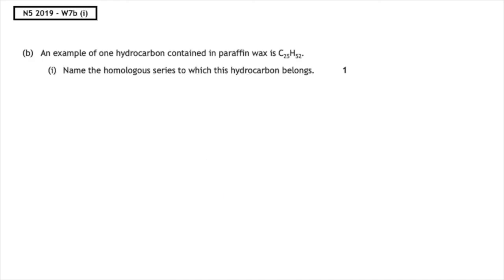This past paper question is from the National 5 2019 written paper part 2b part 1. An example of one hydrocarbon contained in paraffin wax is C25H52. Name the homologous series to which this hydrocarbon belongs.